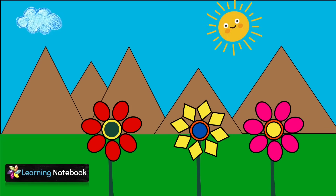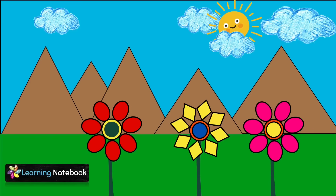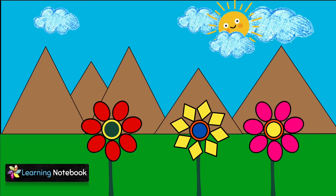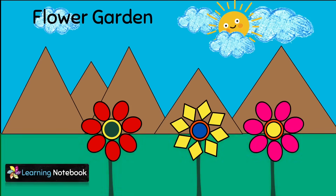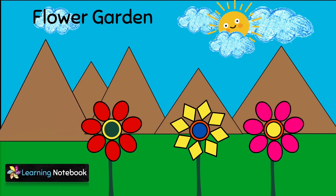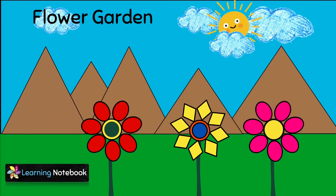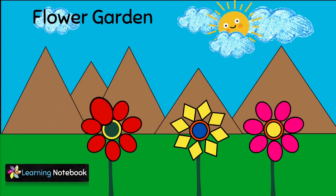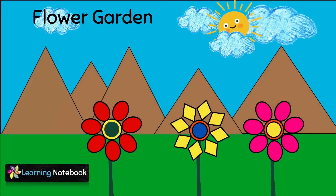Cut out a yellow circle to form the sun and some cloud shapes. Using a black marker pen, write the heading 'Flower Garden.' In this third activity we used different shapes: rectangle, triangle, circle, diamond, oval, and clouds.